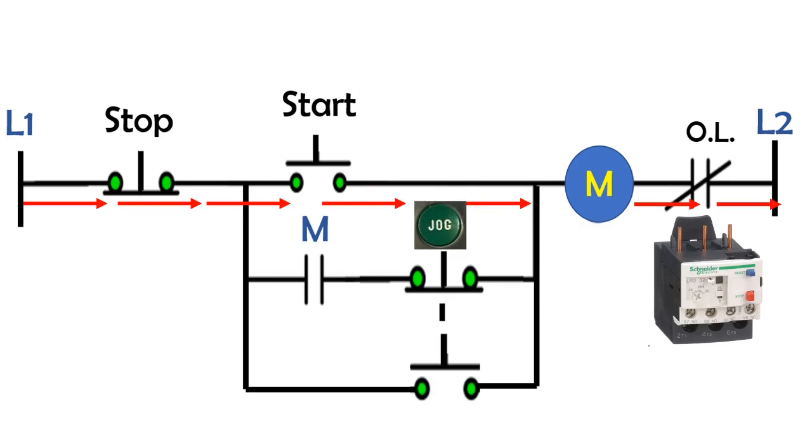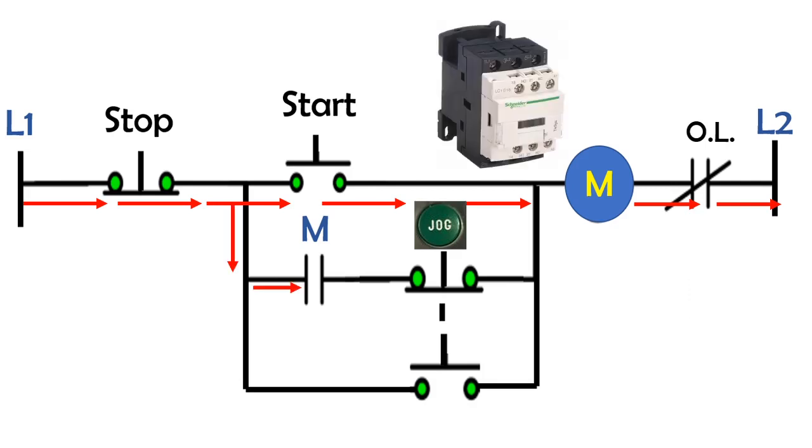The current then returns to the power supply line two. When the magnetic contactor is energized, the normally open contact, which is our latching or sealing contact, will close.